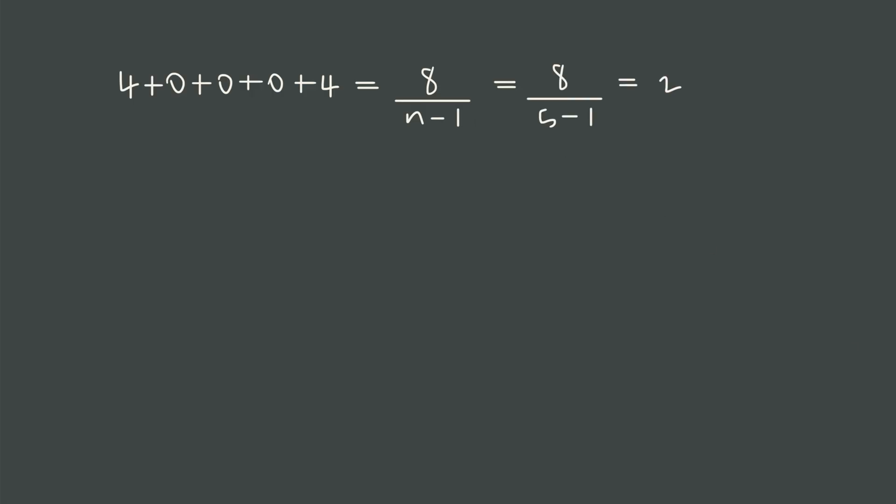In our case, n is equal to 5. So we're dividing by 5 minus 1, we get 8 divided by 4, and that's equal to 2. This number here, the 2, is called the variance. We've found the variance for this data set. Based on how we've built this, we know that variance is the average squared distance.